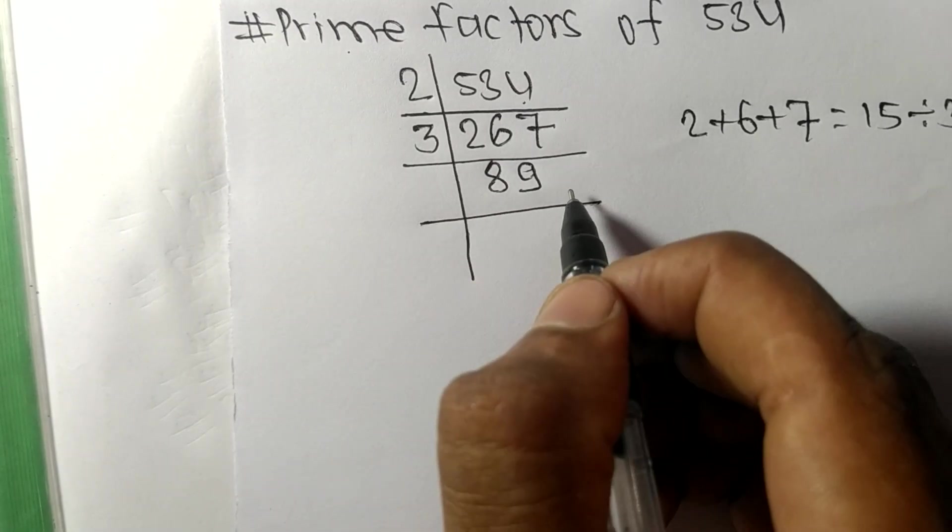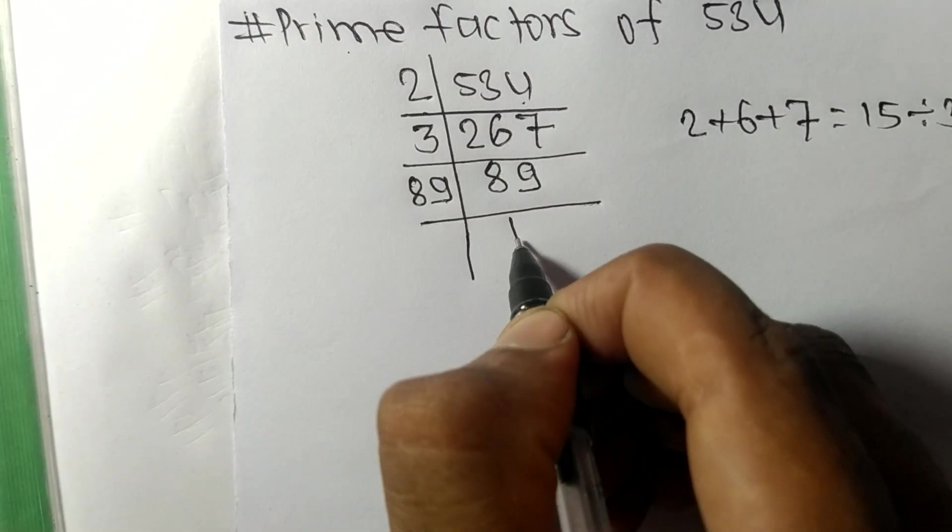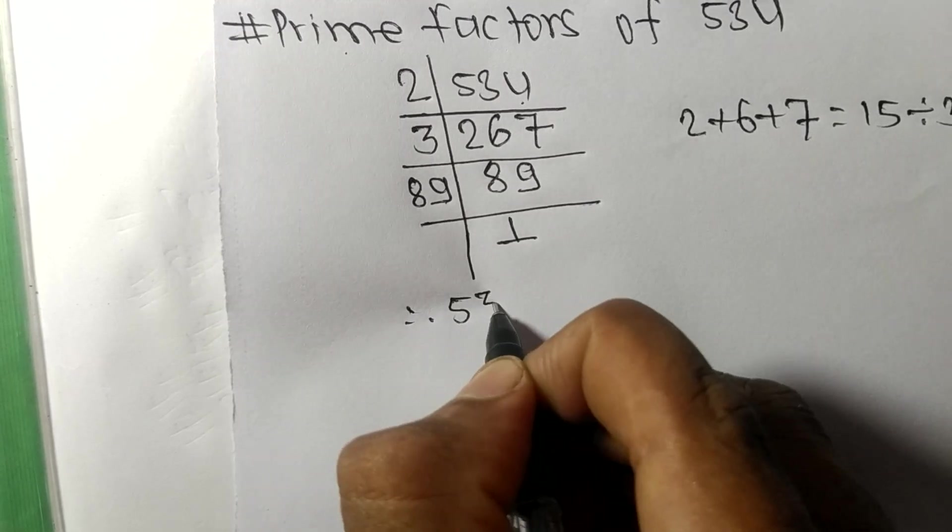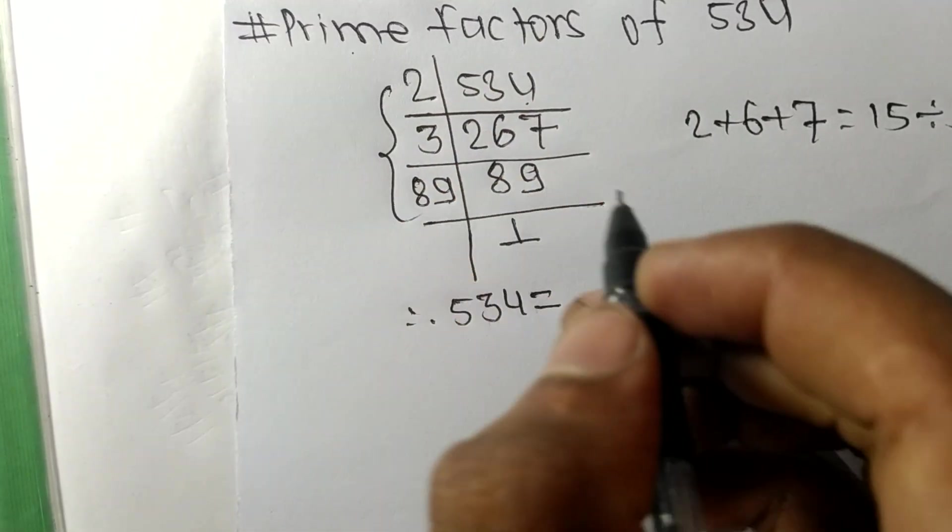Therefore, 534 equals 2 times 3 times 89.